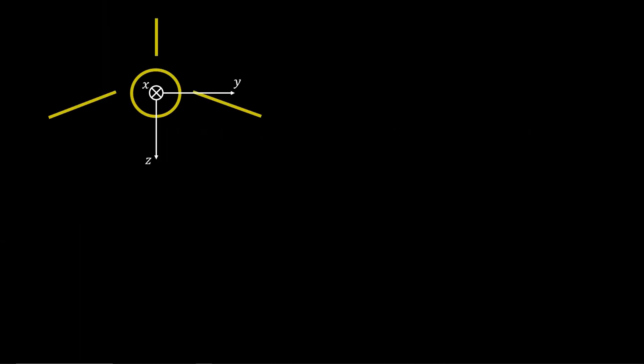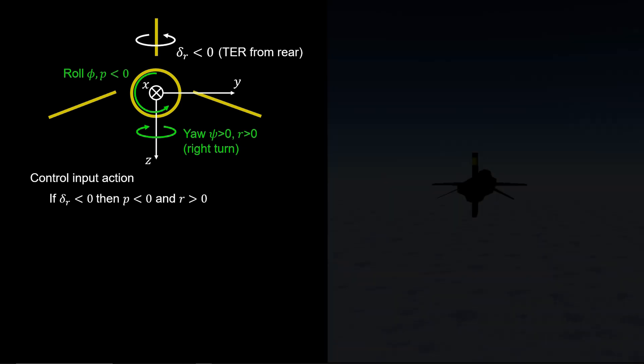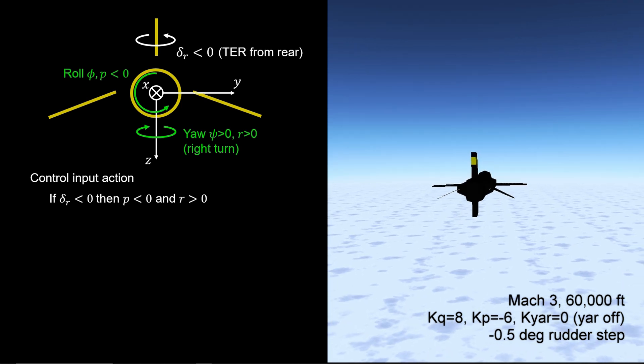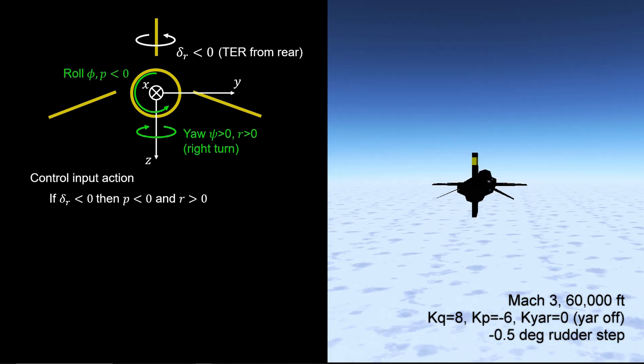Now consider the rudder deflecting trailing edge right as viewed from the rear. This causes a positive yaw moment, turning the aircraft right so that yaw angle and yaw rate are positive. Simultaneously, the force on the rudder also causes the fuselage to roll. Therefore, there are two effects of negative rudder displacement: negative roll rate and positive yaw rate. This body roll due to rudder is an undesirable cross coupling of the rudder into the roll axis.